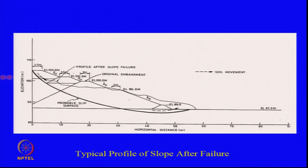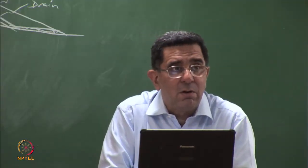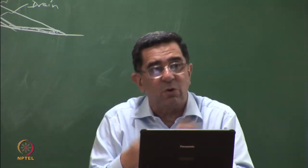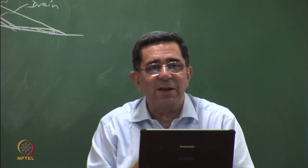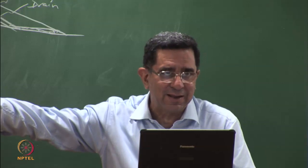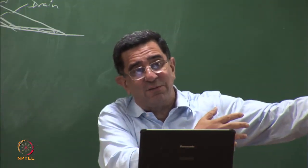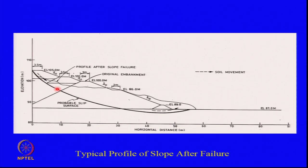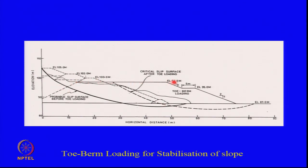This one had failed - this is the profile of the failed soil and the probable failure surface. This is the ash pond; temporarily they have closed it because it has failed and there has been some overtopping. One option is to excavate the whole area and recompact, but before you can excavate you have to dry out the ash which is full of slurry water. In this case, we put a stabilizing berm, which was able to give us the solution.